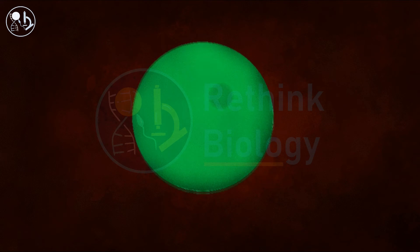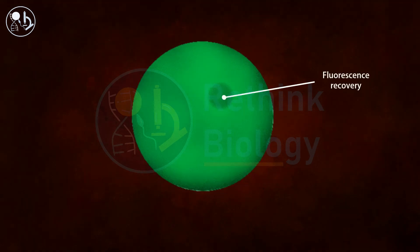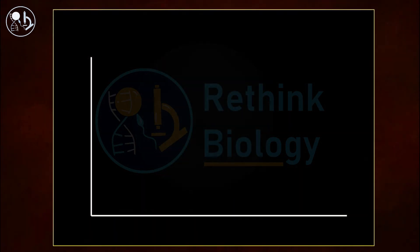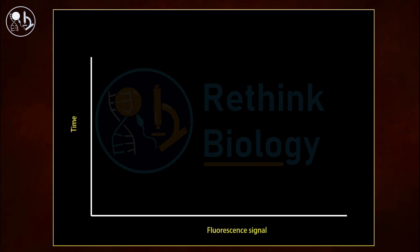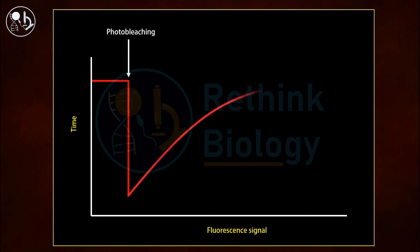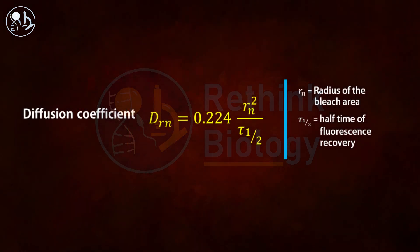The time taken for the fluorescence recovery is directly proportional to the mobility of the molecules. This rate of diffusion, that is the diffusion coefficient, is calculated by the formula: D(Rn) = 0.224 × Rn² / T½, where Rn is the radius of the bleached area and T½ is the half time of fluorescence recovery. Diffusion rates of different molecules can be estimated from this formula.